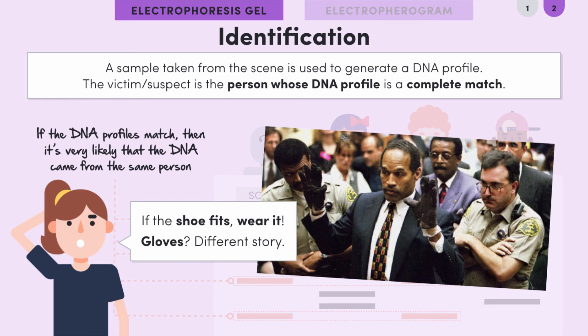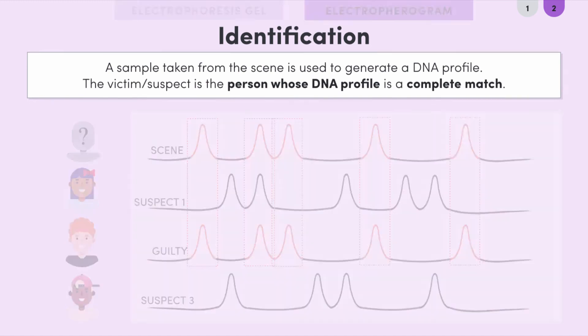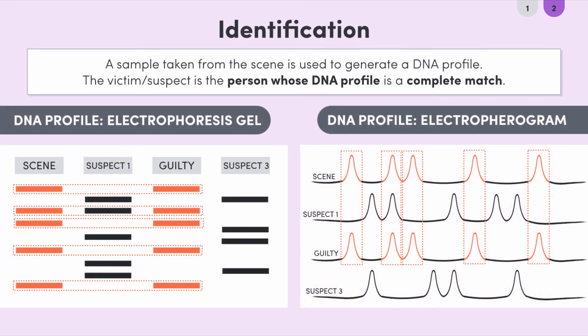Keep in mind that the same information could also be presented as an electropherogram, and again the person with the electropherogram that matches the DNA profile from the scene — the same number of peaks in the same places — is the one who was there. Just remember that in identification, the victim or suspect is the person whose DNA profile is a complete match to the profile from the scene.